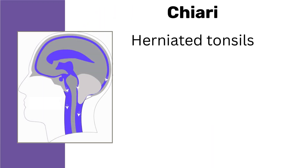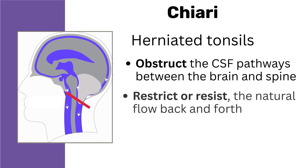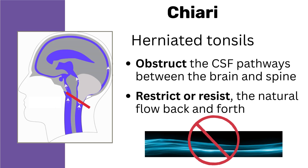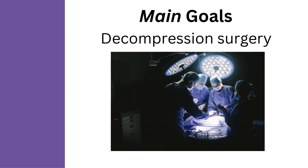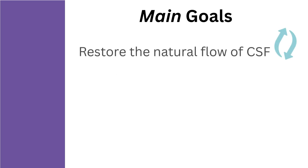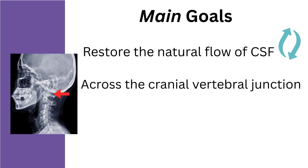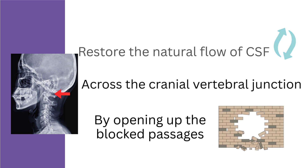With Chiari, herniated tonsils obstruct the CSF pathways between the brain and spine and restrict or resist the natural flow back and forth. In fact, one of the main goals of decompression surgery is to restore the natural flow of CSF across the craniovertebral junction by opening up the blocked passages.